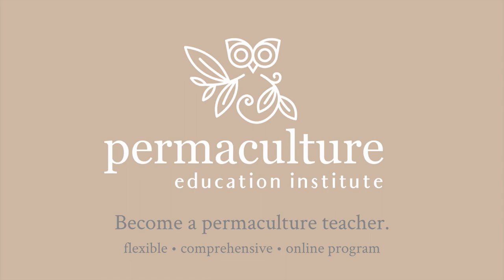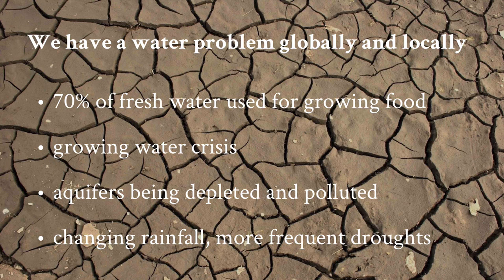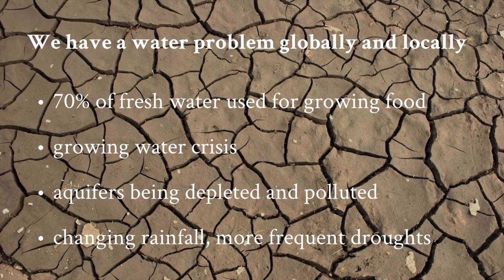I have some exciting news about these programs that I'll share later. Right now I think it's a good time to launch into why we're exploring water resilience. We have a water problem — it's actually a water crisis globally and locally. Around 70 percent of the fresh water used in the world is used for growing food, and it's becoming increasingly polluted and depleted. We're having changes in rainfall patterns and more frequent droughts.